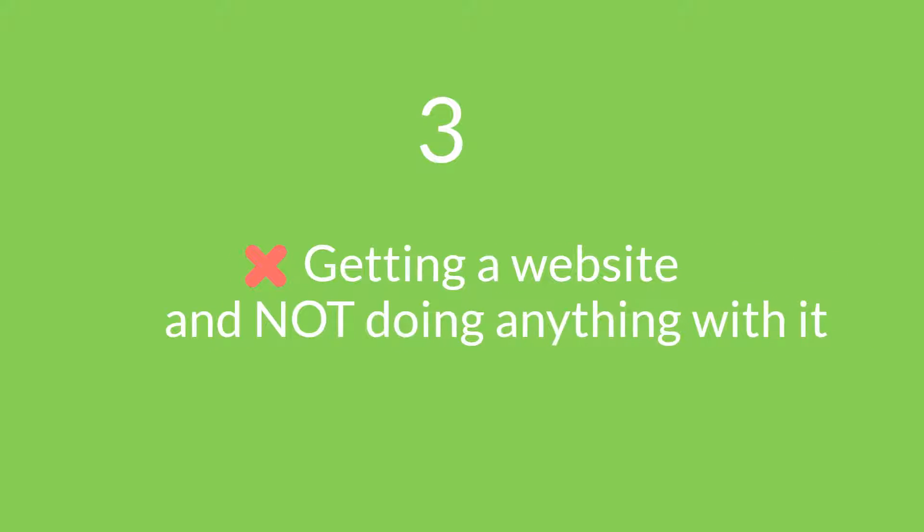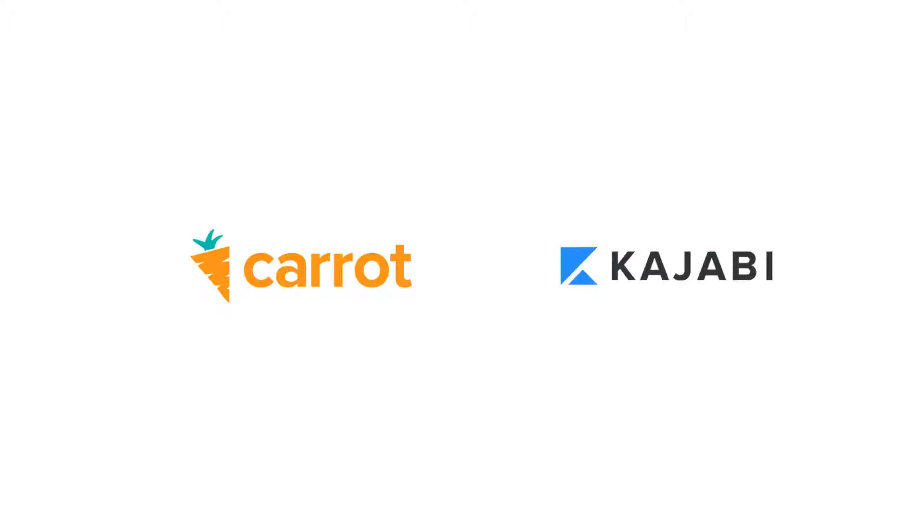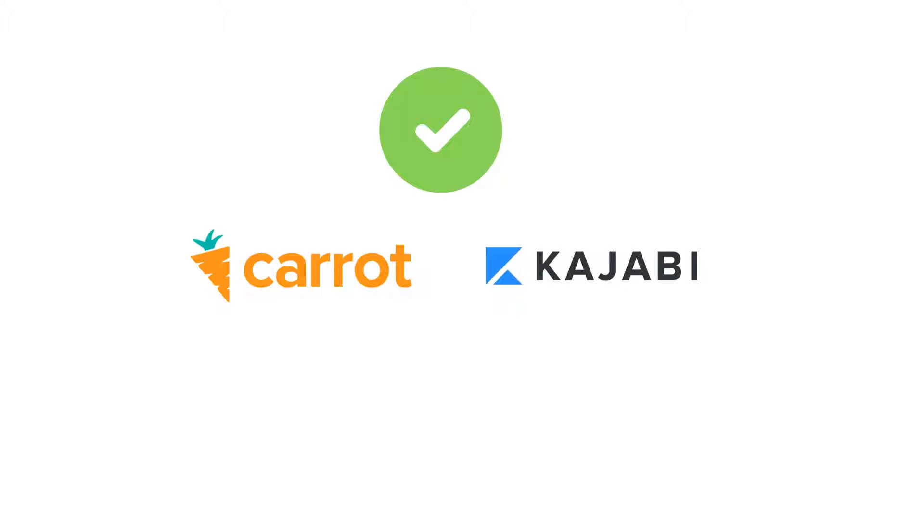Mistake number three is getting a website and not doing anything with it. I recommend two platforms: Carrot and Kajabi. If you're interested in those, I have other videos on my YouTube channel — I'll put those links in the description below. I reviewed the Carrot platform and why I think it's a great platform for agents and investors. I also did a video where I built a website in 30 minutes literally using Kajabi — and I timed it. Kajabi is more for if you have a service-based business, coaching, or an online course.